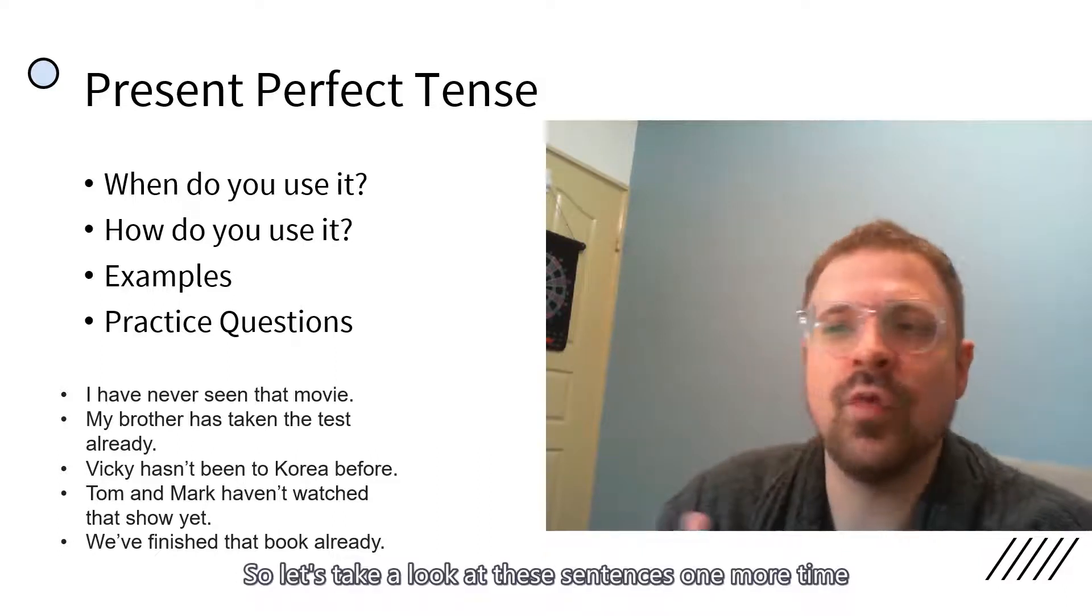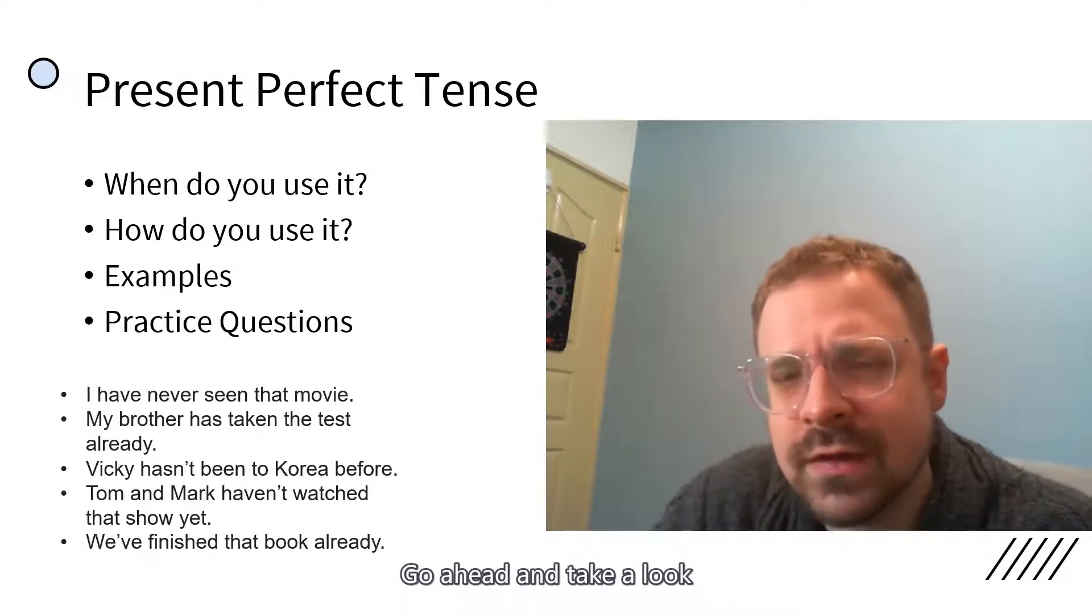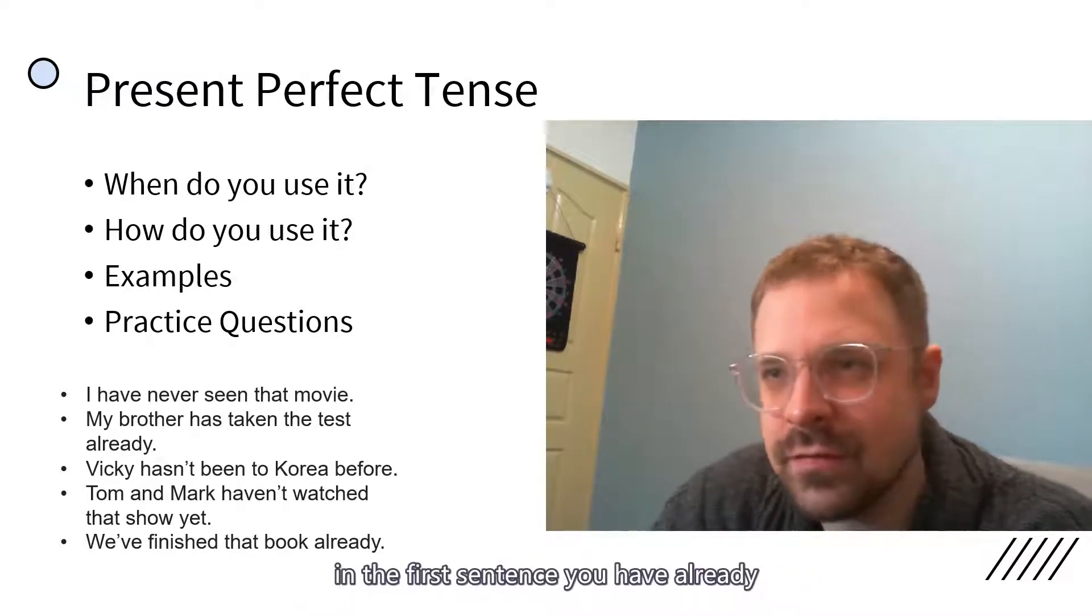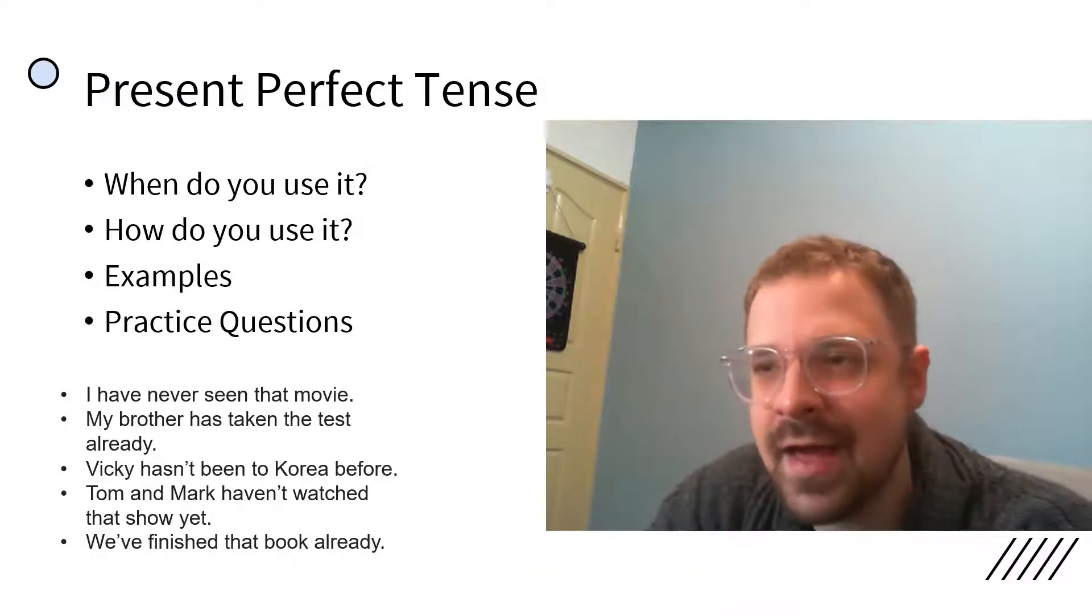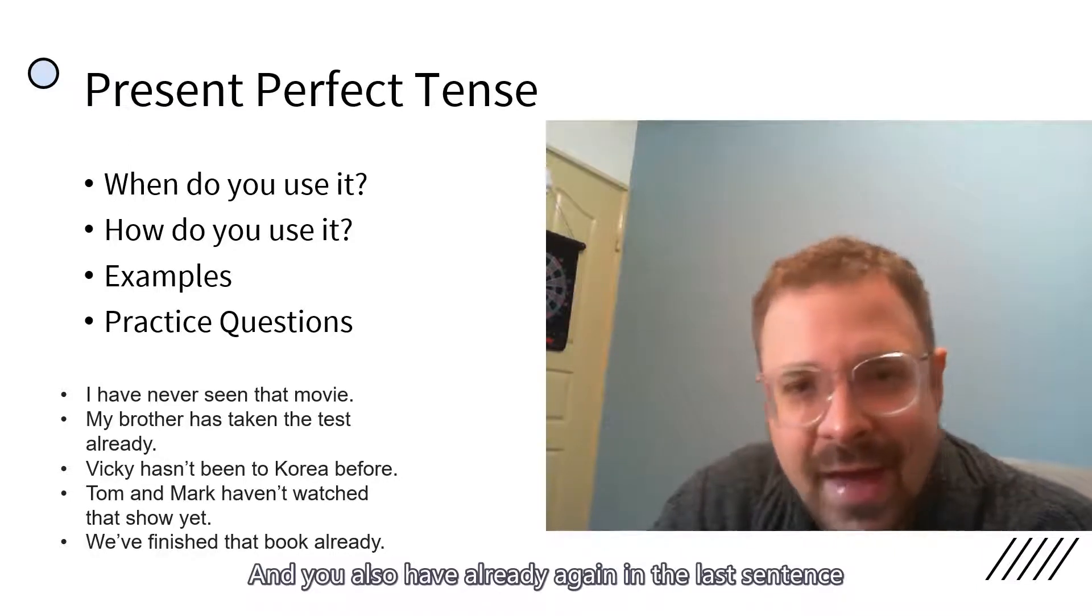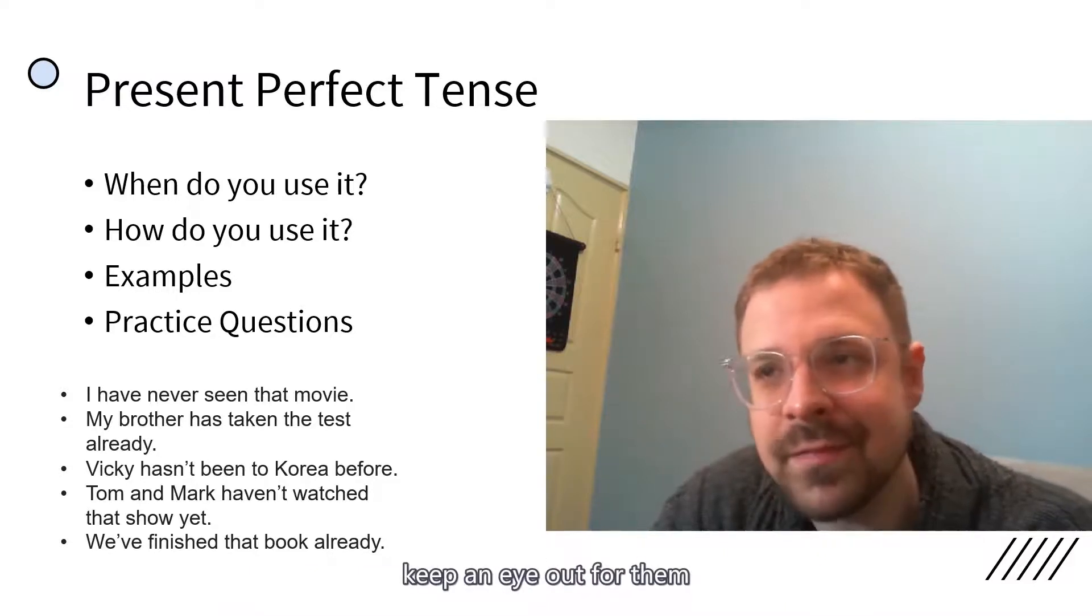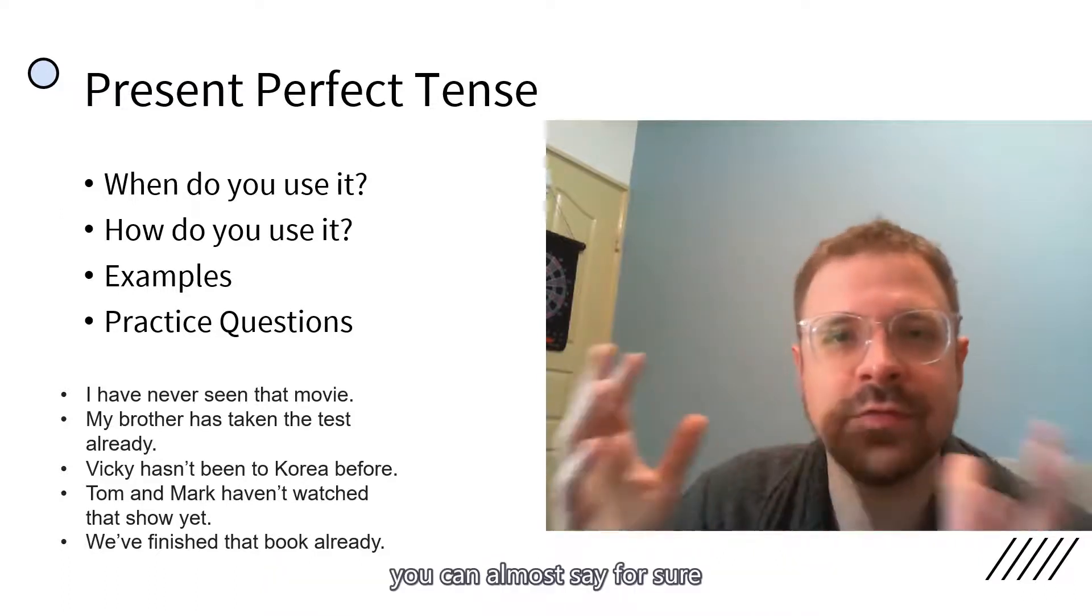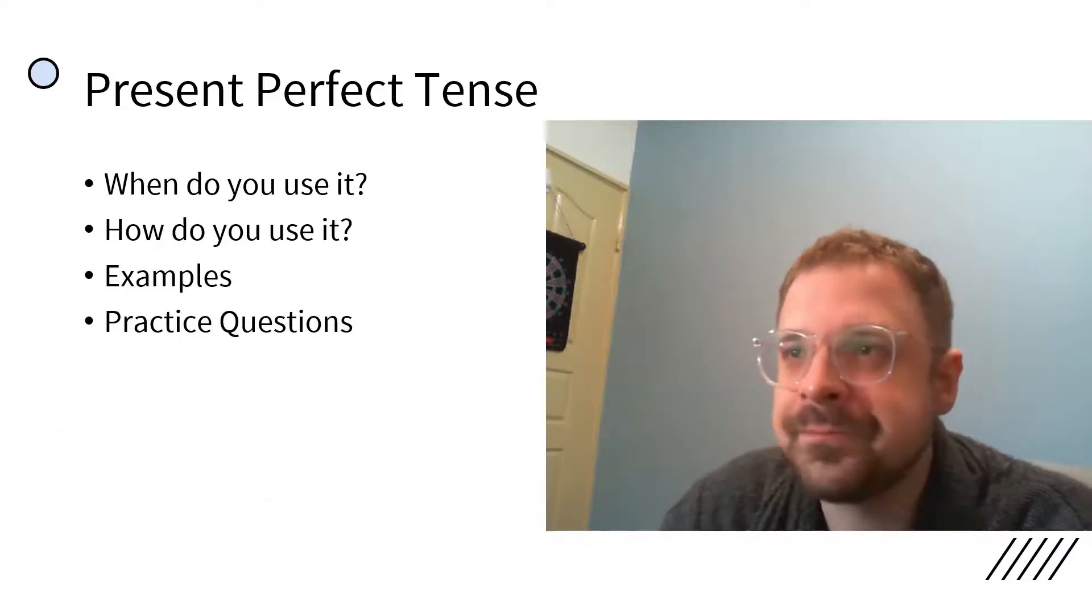So let's take a look at these sentences one more time. I want you to take a minute to see if you spot any of those keywords that I mentioned before. Go ahead and take a look. All right. There are basically keywords in every one of these sentences. You have never in the first sentence. You have already in the second sentence. You have before in the third. In the fourth, you have yet and you also have already again in the last sentence. These words mostly will appear in perfect tense sentences. So keep an eye out for them. If you see one of these words and have or has in a sentence, you can almost say for sure without even thinking about the structure of the rest of the sentence that this is a perfect tense sentence.